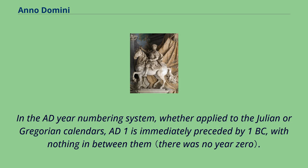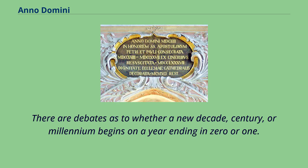In the AD year numbering system, whether applied to the Julian or Gregorian calendars, AD 1 is immediately preceded by 1 BC, with nothing in between them. There are debates as to whether a new decade, century, or millennium begins on a year ending in 0 or 1.